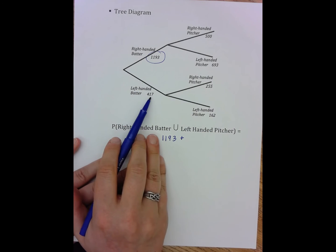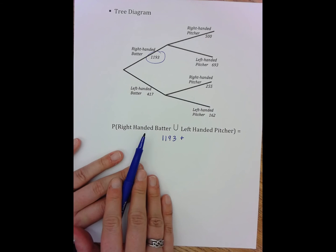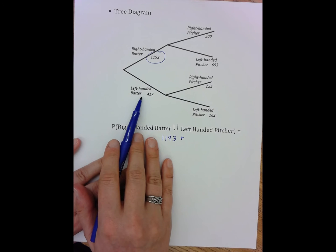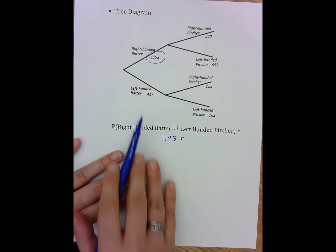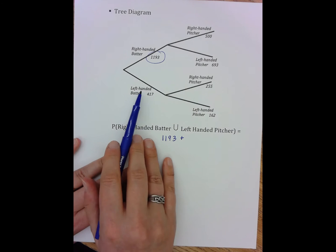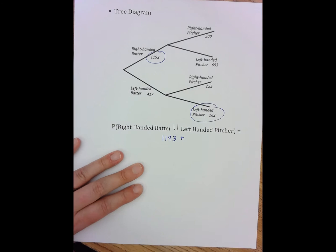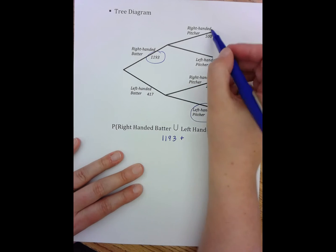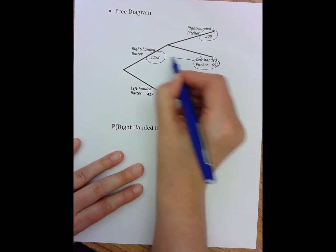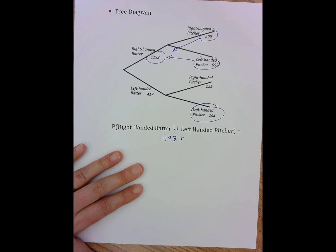Now in this side, I can't pick all 417 because not all 417 are right-handed batters. In fact, none of them are right-handed batters. So now I'm looking for those who are left-handed but are left-handed pitchers. All of these people are right-handed batters. Some of them are also left-handed pitchers. But I only care about if they fit into one of the two categories, not necessarily both of them. That's something else.